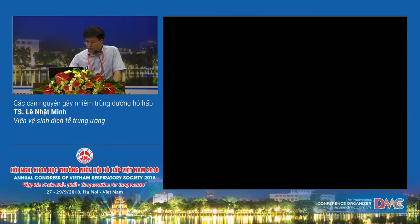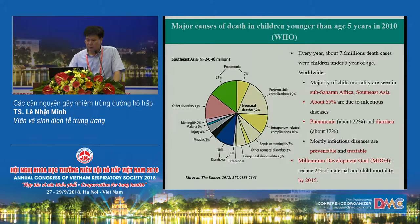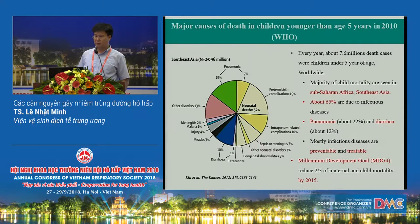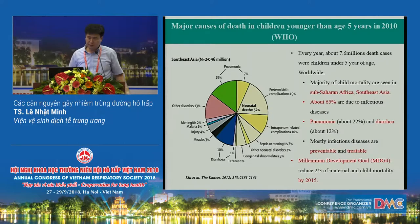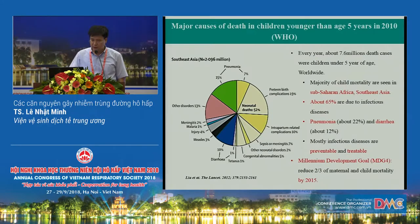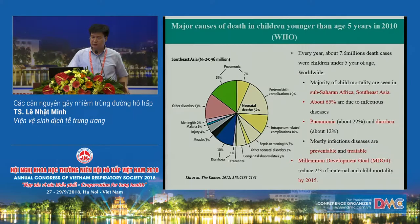As you know, WHO estimates every year about 7.6 million death cases for children under five years of age. The most death cases occur in South Africa and Southeast Asia, and about 65% are due to infectious disease — most of them pneumonia and diarrhea. There are many viruses and pathogens that cause pneumonia in children.